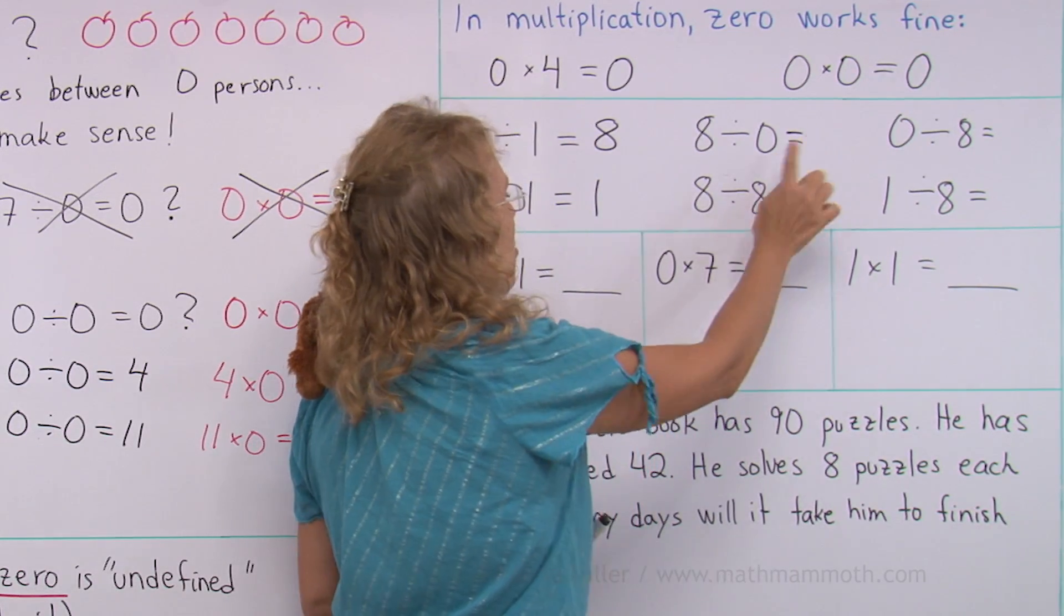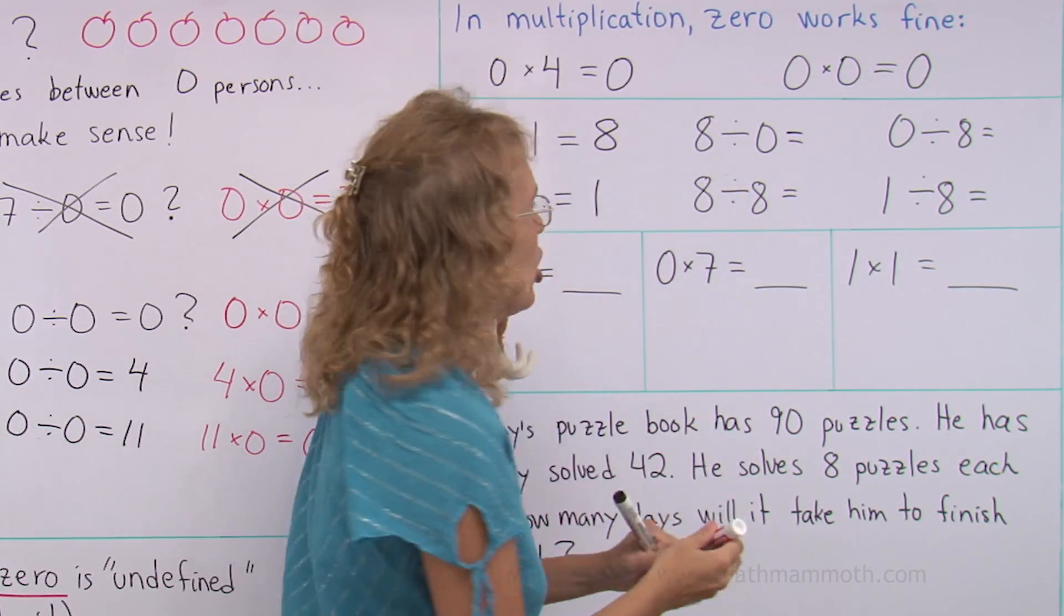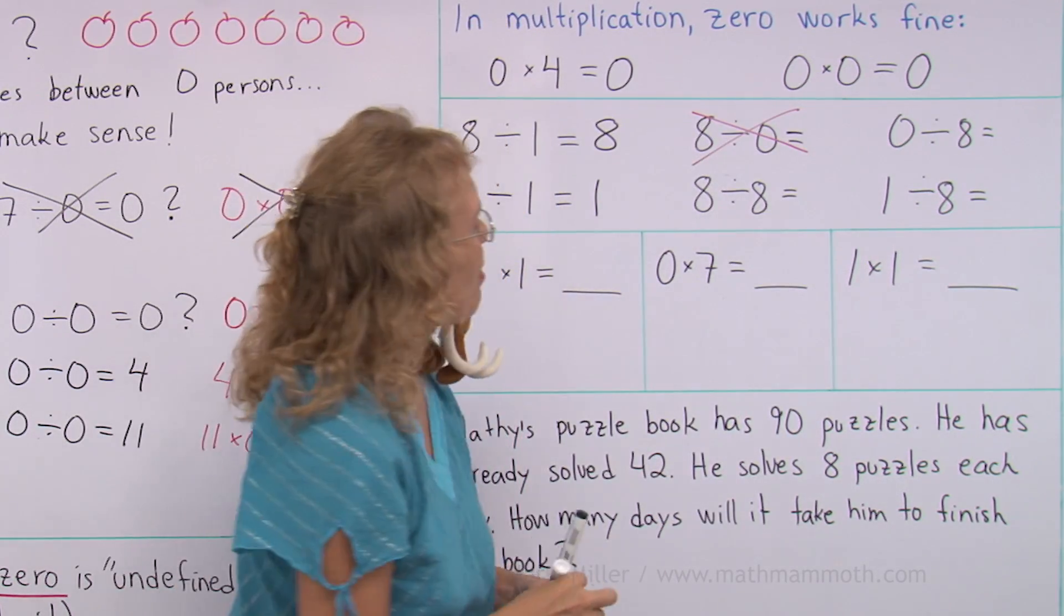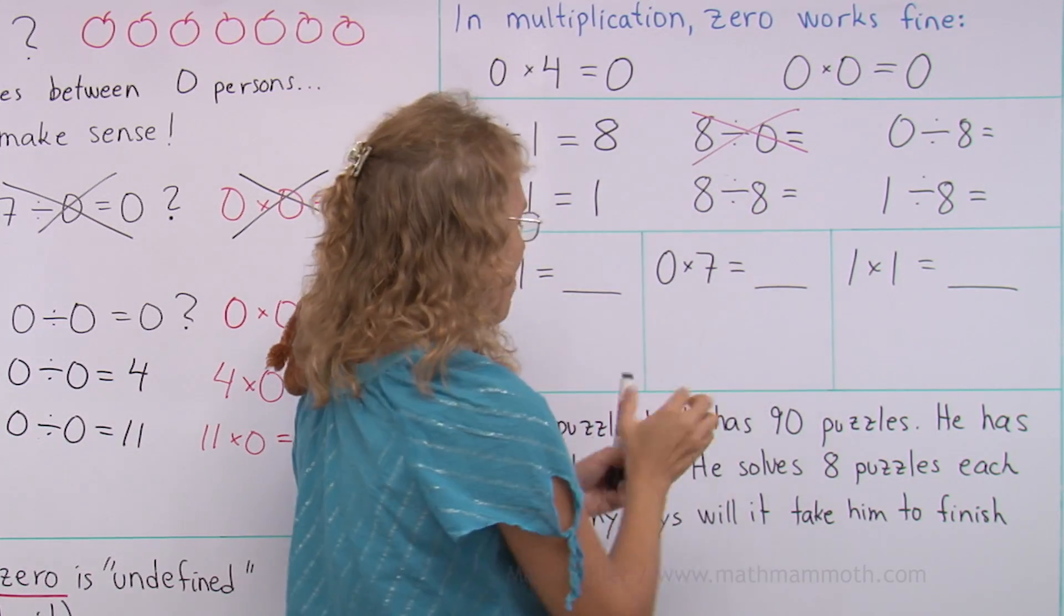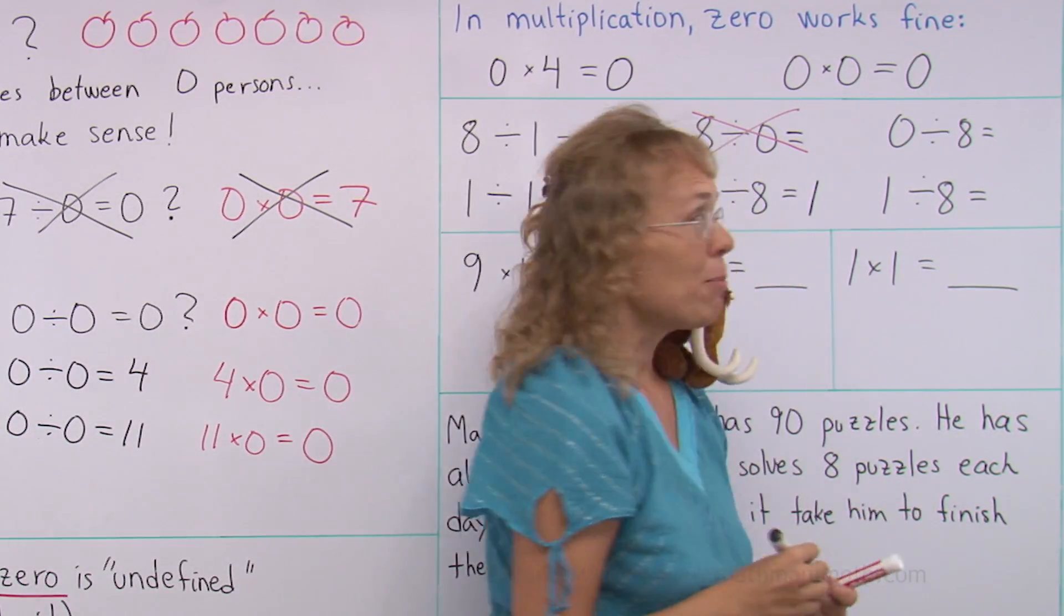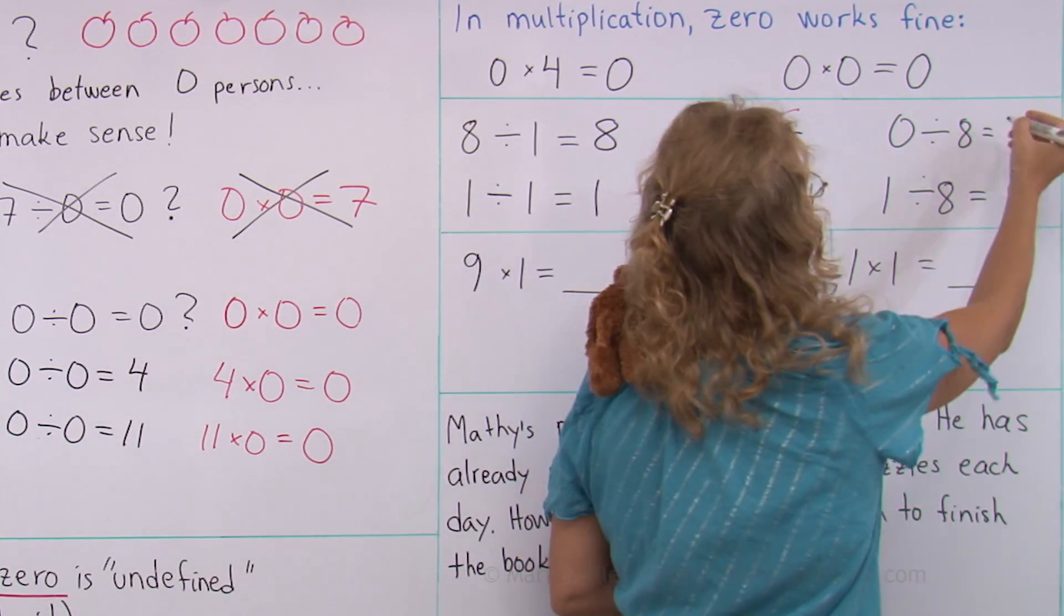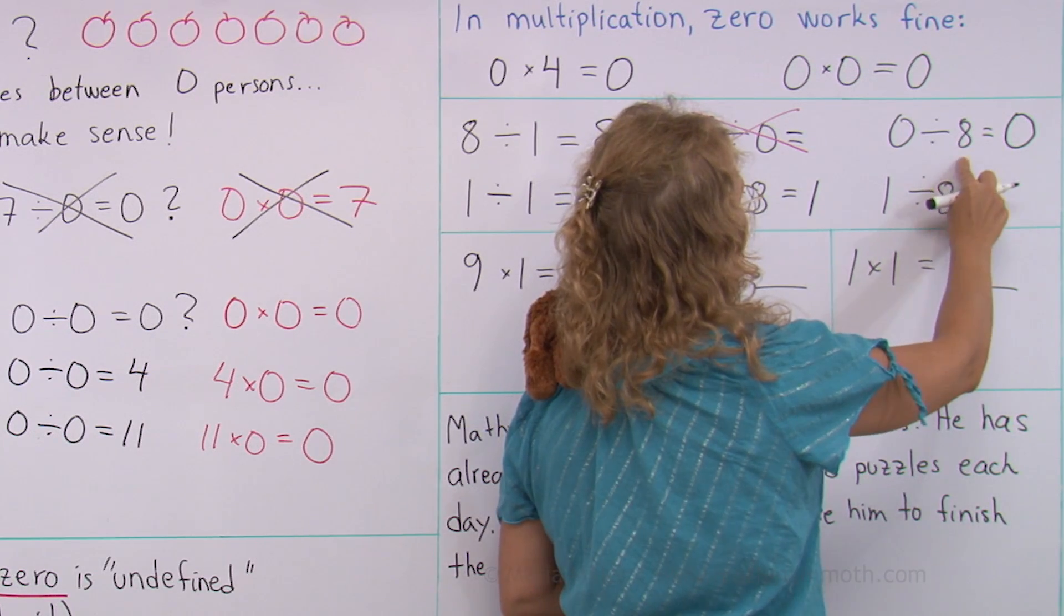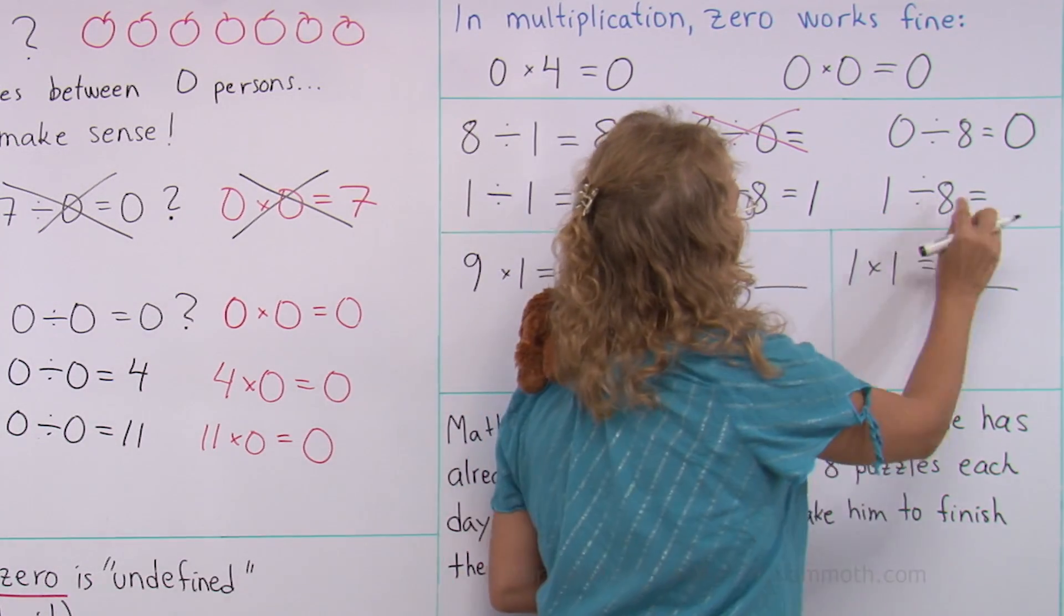Eight divided by zero. How many zeros are in eight? This is the one we need to just cross out. We cannot do it. Eight divided by eight. How many eights are in eight? One. Zero divided by eight. How many eights are there in zero? Zero. And to double check, let's multiply. Zero times eight equals zero. Everything is fine. And then one divided by eight.